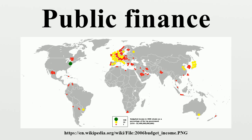Government debt is money owed by any level of government — either central or federal government, municipal government, or local government. Some local governments issue bonds based on their taxing authority, such as tax increment bonds or revenue bonds. As the government represents the people, government debt can be seen as an indirect debt of the taxpayers. Government debt can be categorized as internal debt, owed to lenders within the country, and external debt, owed to foreign lenders. Governments usually borrow by issuing securities such as government bonds and bills. Less creditworthy countries sometimes borrow directly from commercial banks or international institutions such as the International Monetary Fund or the World Bank.